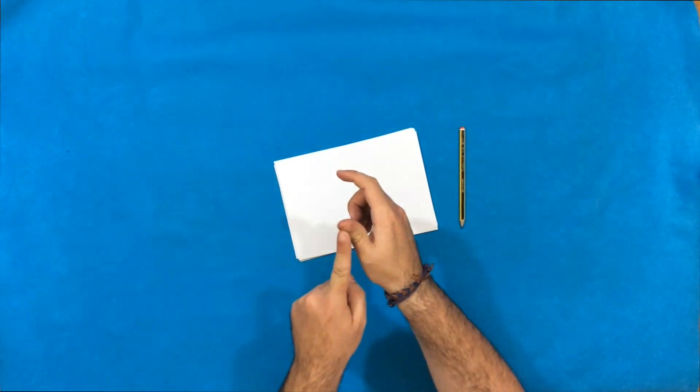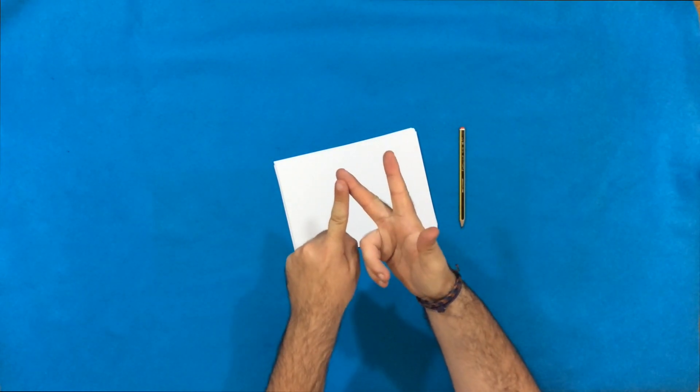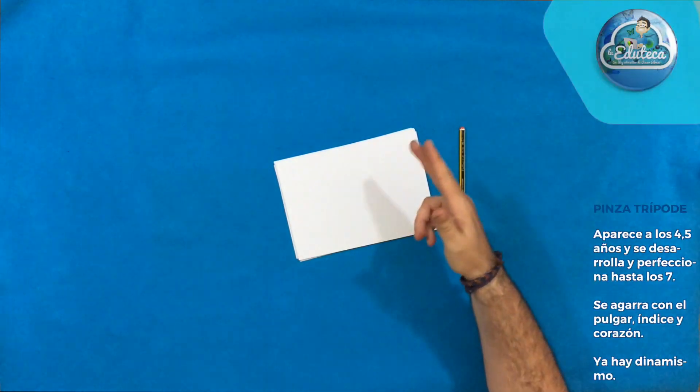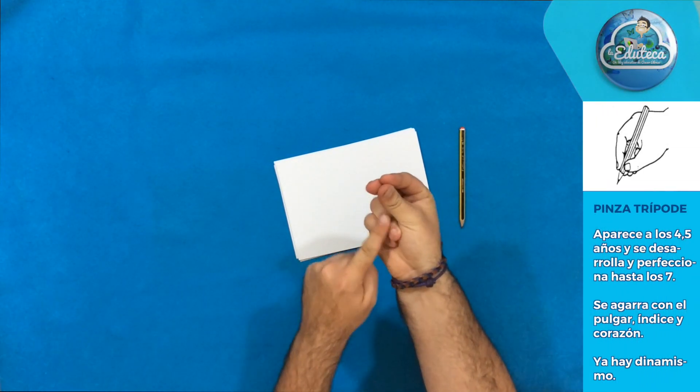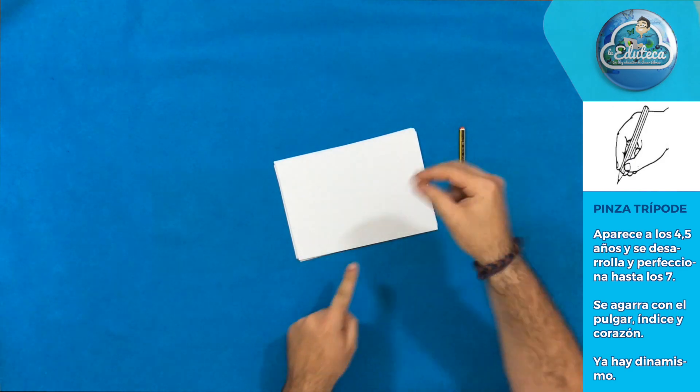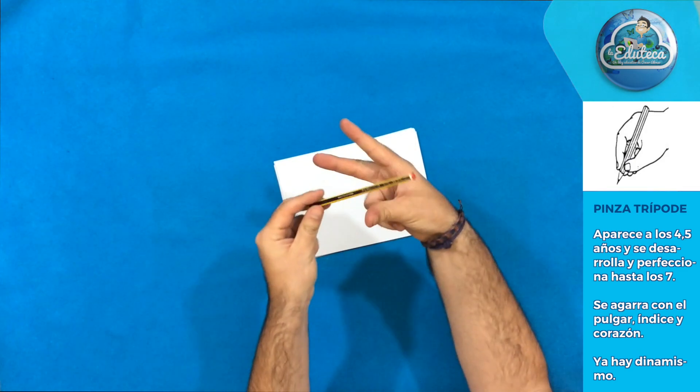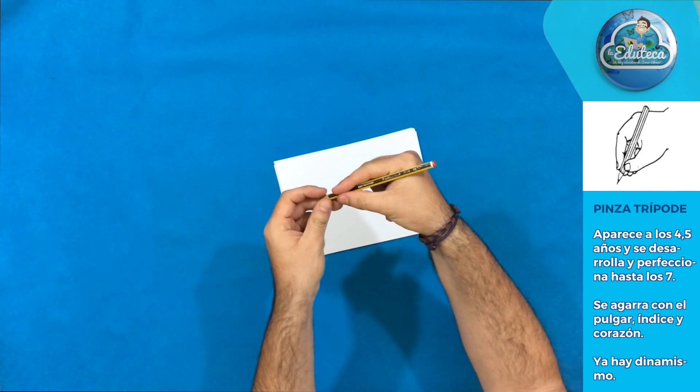Y por último tenemos la pinza trípode donde intervienen los 3 dedos pulgar, índice y corazón. Se desarrolla y se perfecciona desde los 4 años y medio hasta los 7 años y en ella van a participar como hemos dicho el dedo pulgar, el índice y el corazón.